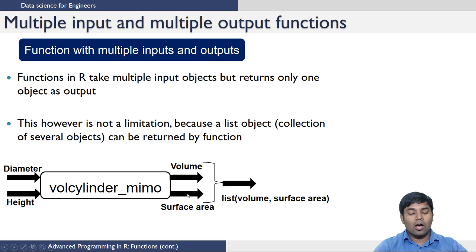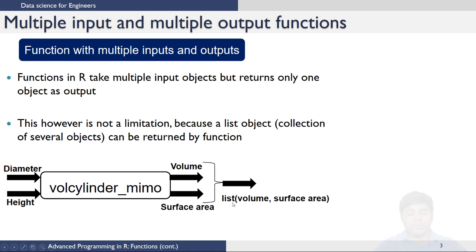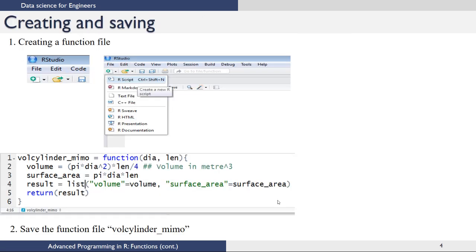Since R can return only one object, what I have to do is create one object which is a list that contains both the volume and surface area and return that list. Let us see how we can do that in the next slide.